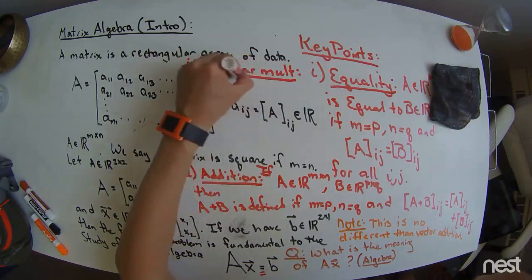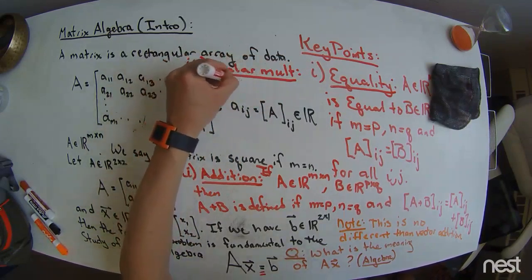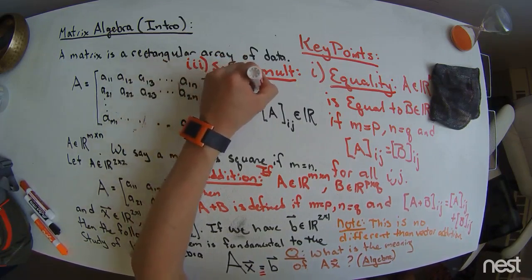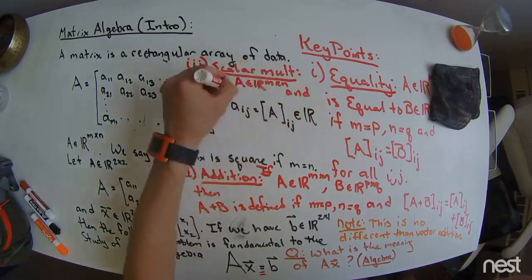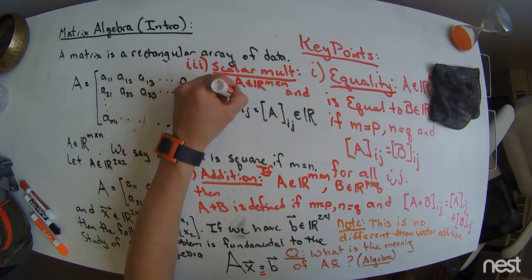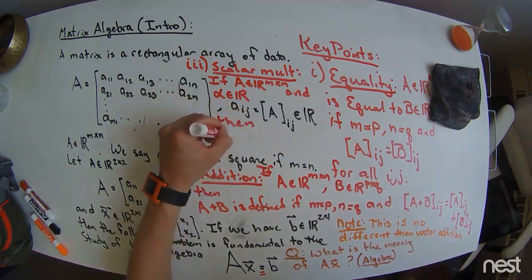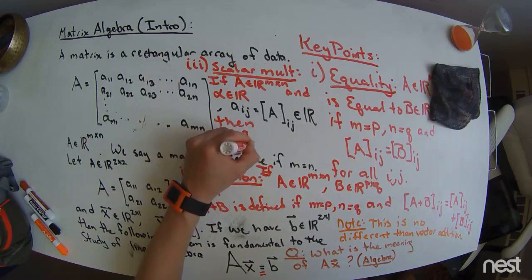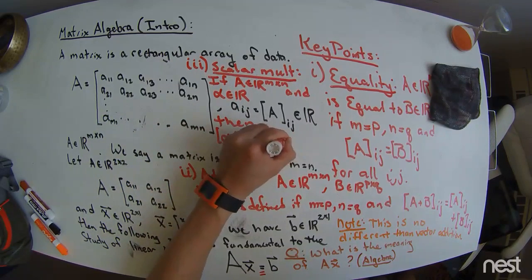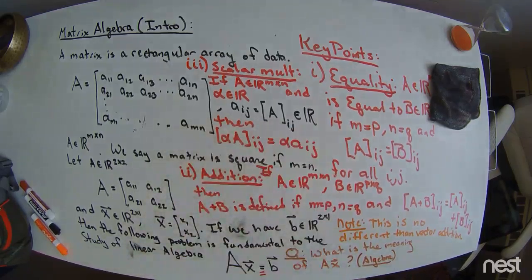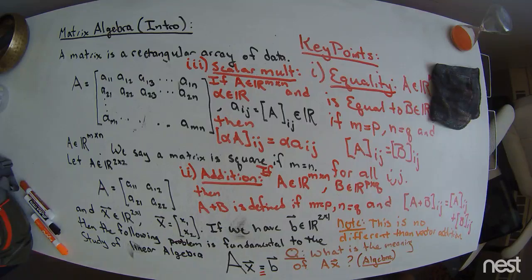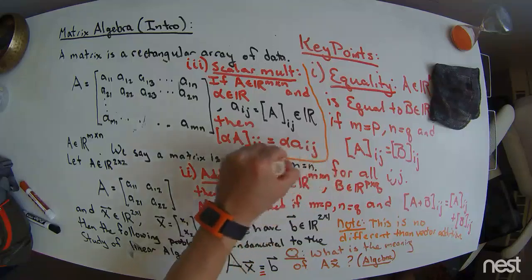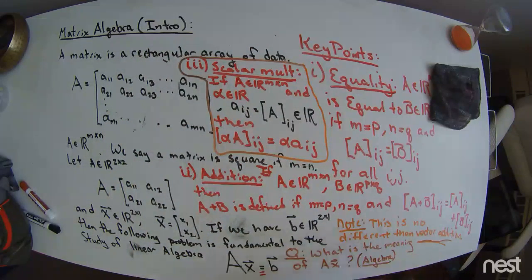Okay, so then the third thing that I've kind of crammed in here is scalar multiplication. If A is in Rm by N and alpha is in R, then alpha times A i,J is equal to R. Alpha times A i,J. So what we're really saying here is that I can scale a matrix just like I would scale a vector.